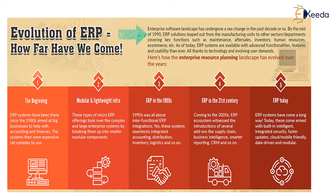The evolution of ERP started in the 1980s, which aimed at big businesses, helping with accounting and finances. These systems were very expensive and very complex to use. Then came modular and lightweight infrastructure, where micro ERP systems took over the complex large enterprise systems by breaking them into smaller modular components.